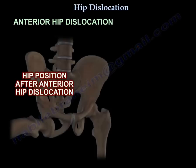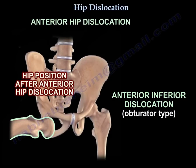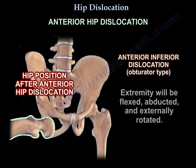This is an anterior inferior hip dislocation, called the obturator type. The extremity will be flexed, abducted, and externally rotated.